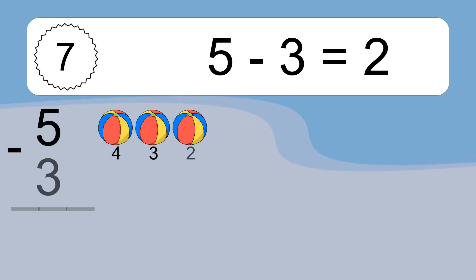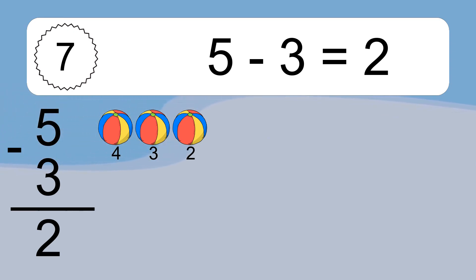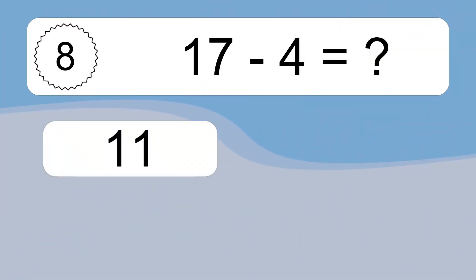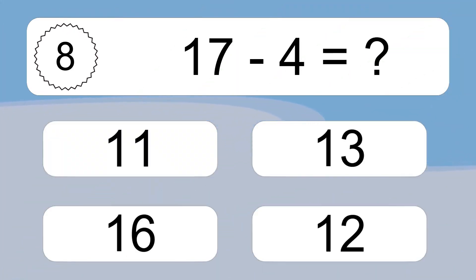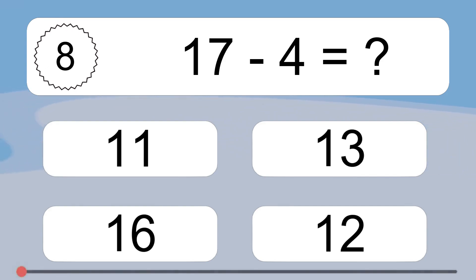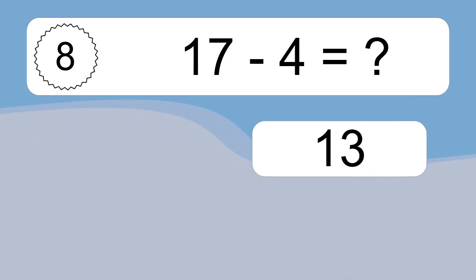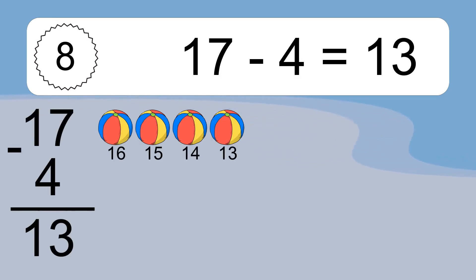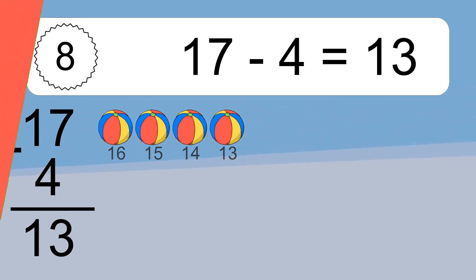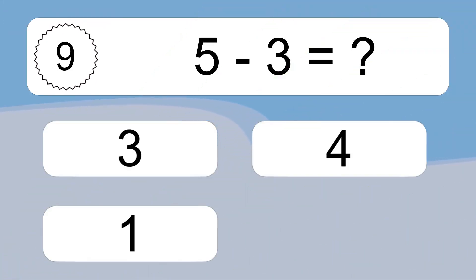5 minus 3 equals 2. Let's count it: 4, 3, 2. 17 minus 4 equals what? 17 minus 4 equals 13. Let's count it: 16, 15, 14, 13.